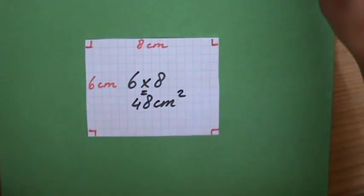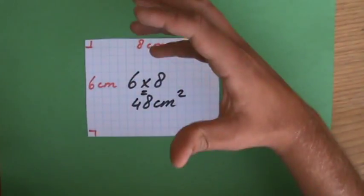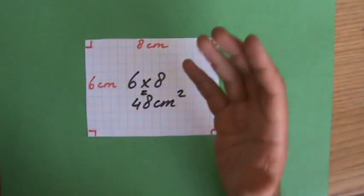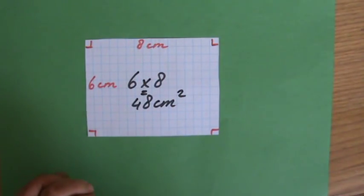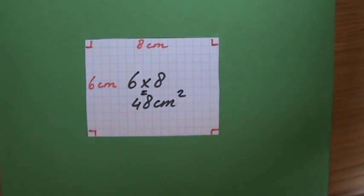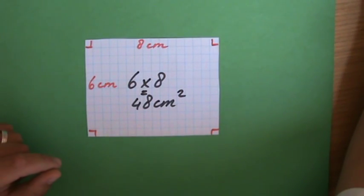So the area of a rectangle: length times width, base times height. Yeah, six times eight, 48 centimeters squared. But we weren't talking about rectangles. We were talking about triangles.